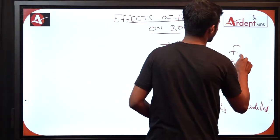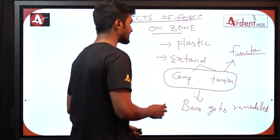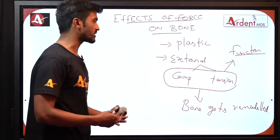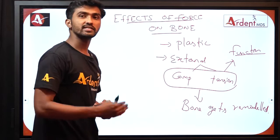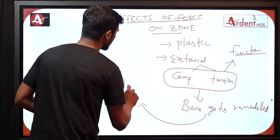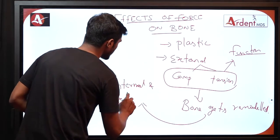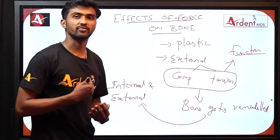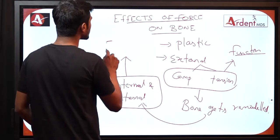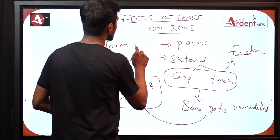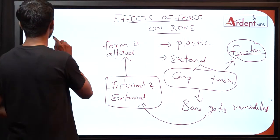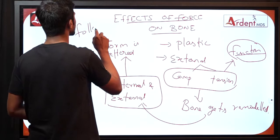These are functions. Compression, tension, or pressure can be of any function such as mastication, chewing, or breathing — in any mode of function when it is placed upon the bone, the bone tends to change its shape by means of remodeling. So both the internal and external architecture of the bone tends to get changed by means of remodeling in response to function, and the form of the bone is altered in response to the function. So we can say that form follows function.